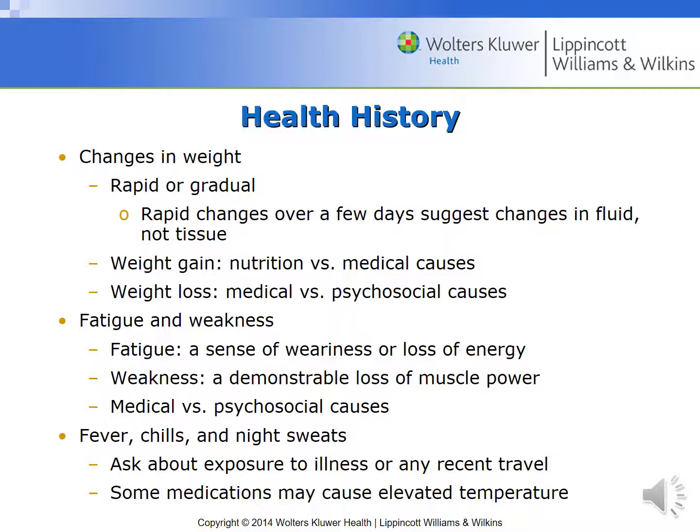When you're going over the health history, you want to look for any changes in weight. Is it rapid or gradual? Was it planned or not? Any rapid changes over a few days might suggest changes in fluid, not tissue. Looking at any weight gain — is it based on a medical issue or is it based on their nutrition? Weight loss — is it medical or from a psychosocial cause? And again, is it planned or not?